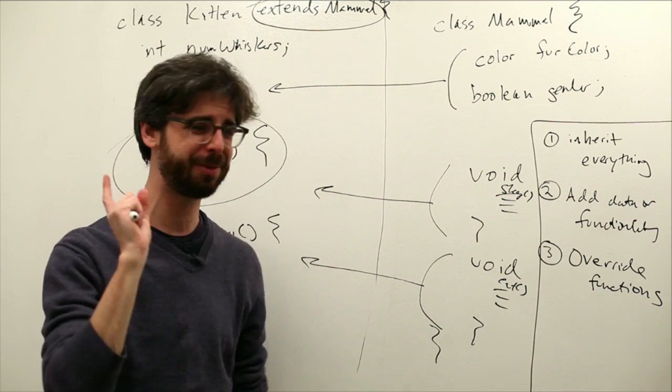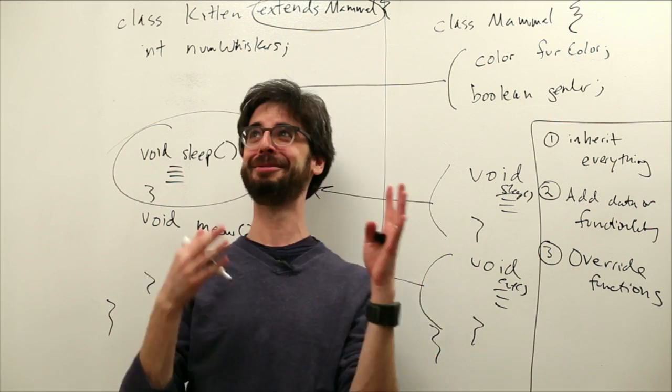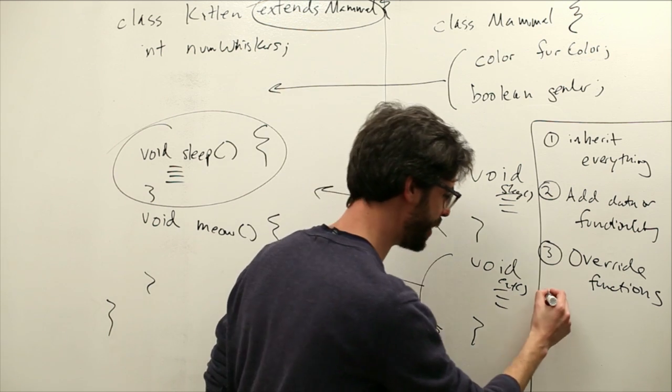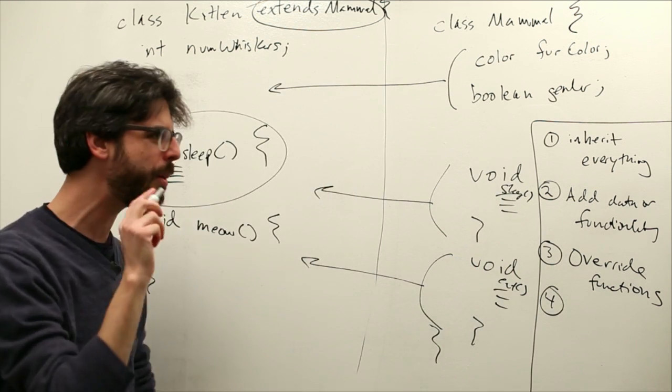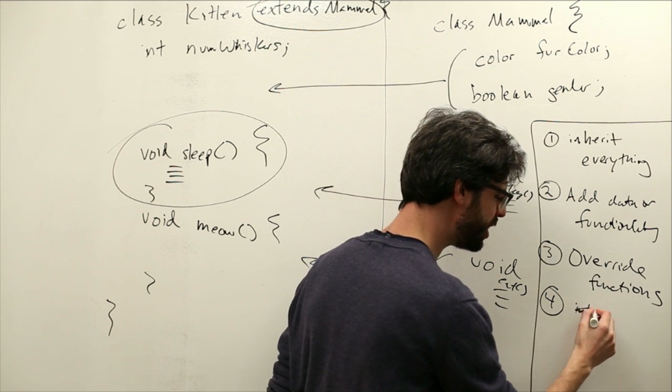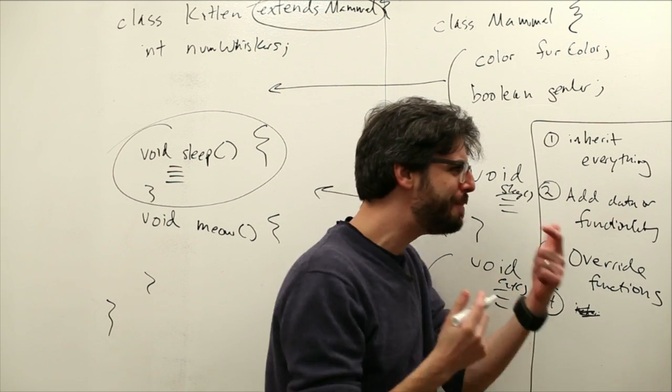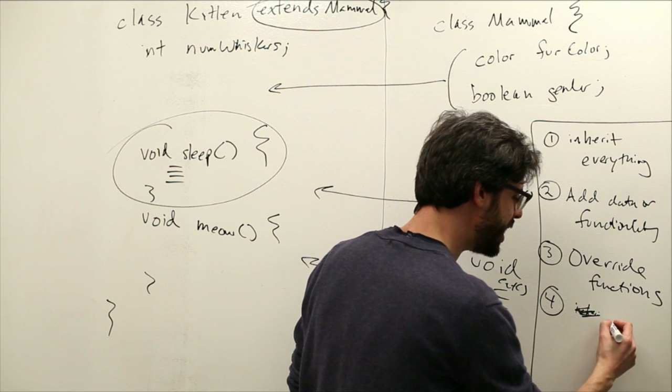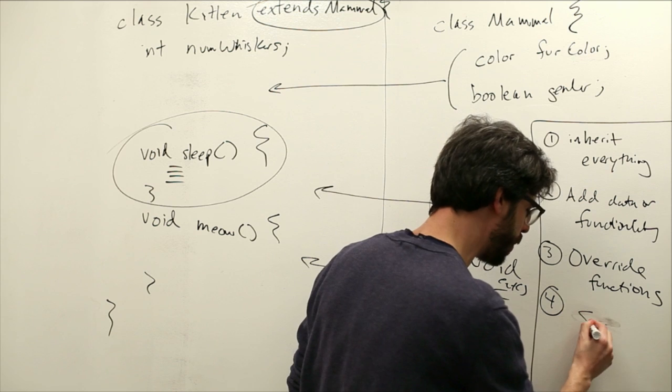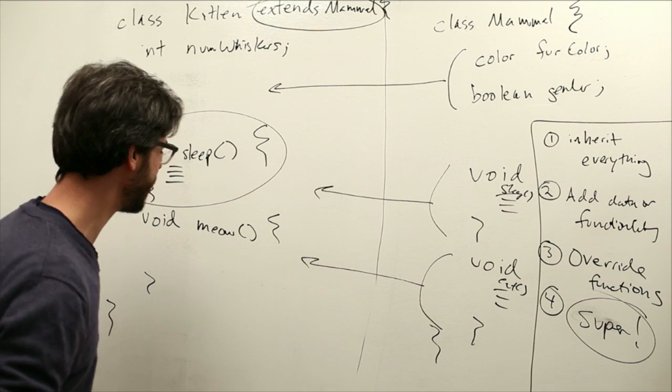The fourth thing, which I'm sort of making up, I guess. I think I might be making all of this up because I just live in a crazy world with green screens and lights and whiteboards by myself. But this thing that you can do, I'm going to call, is you can kind of inherit. You can override plus inherit. You can modify. You can kind of do both. I'm just going to write the word super.